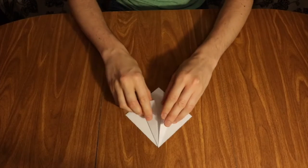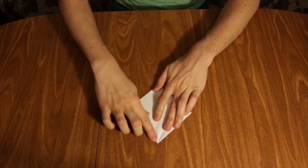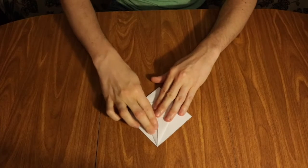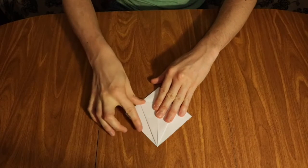So when you're done with that, it should look a little bit like a kite shape. See? We just fold those into the center. Those two corners of the square meet to make a little kite shape.